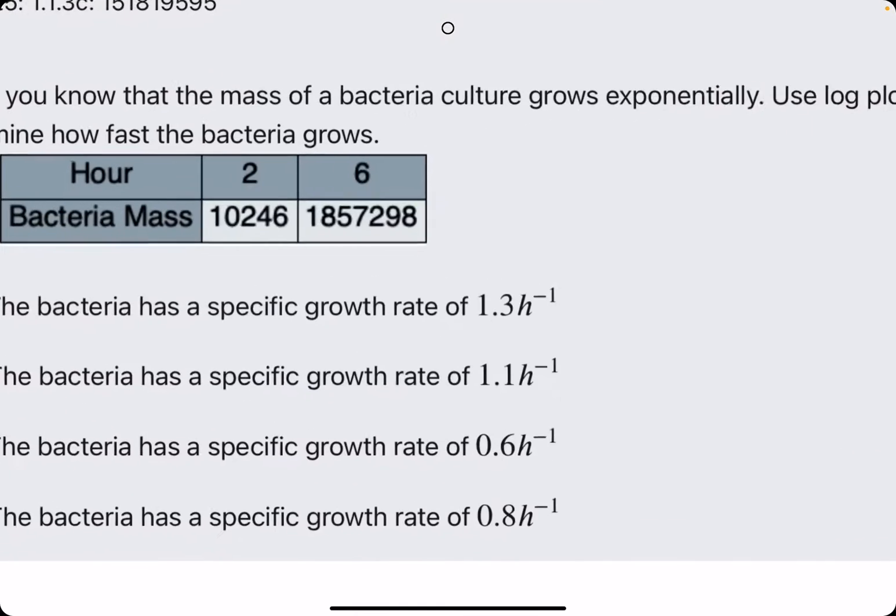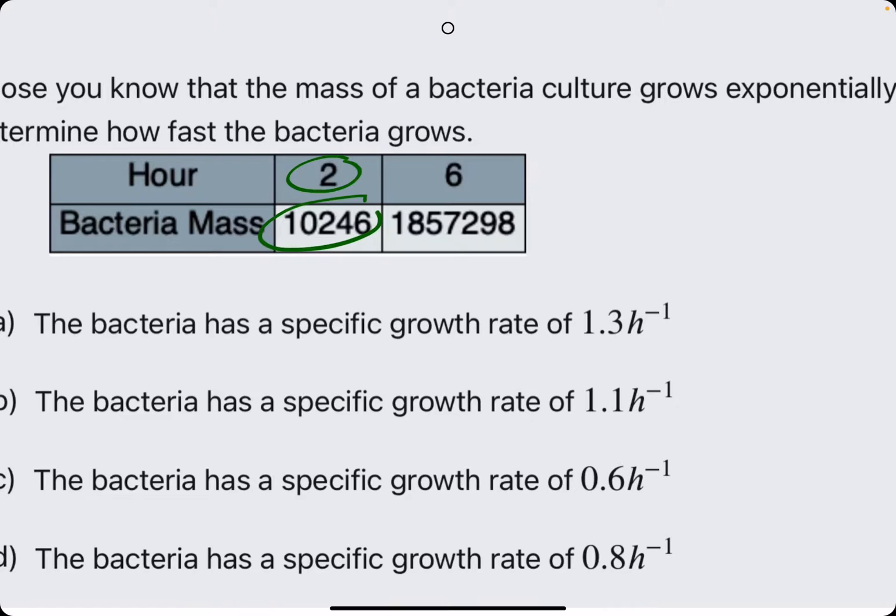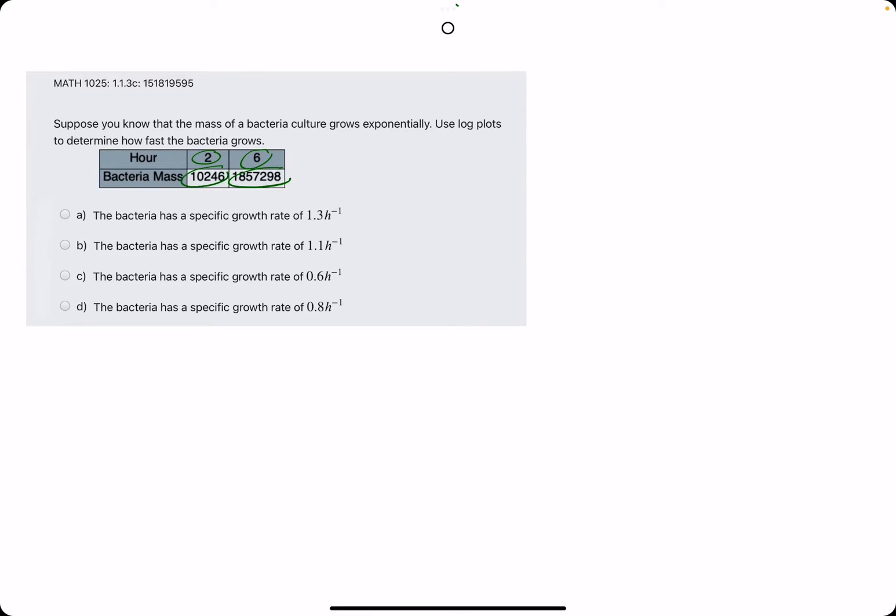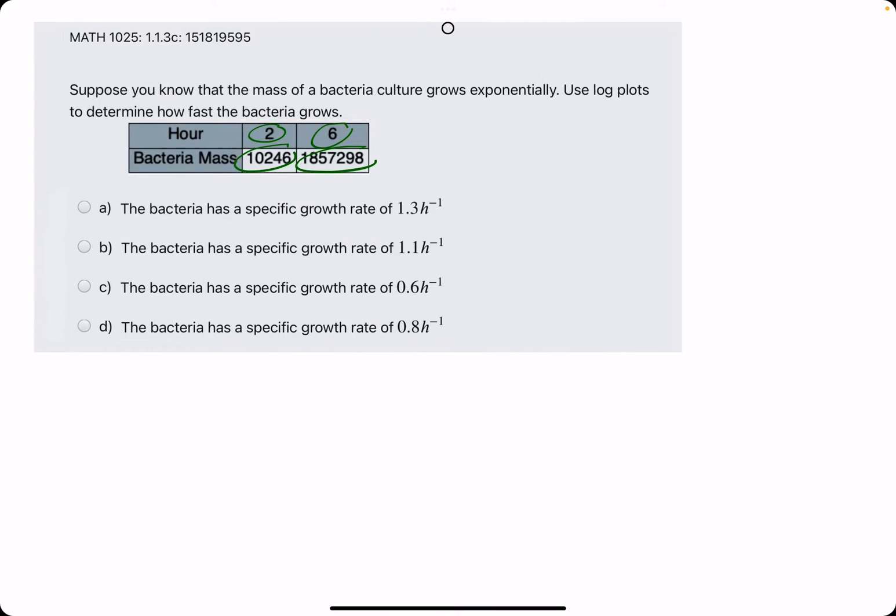So, we want to find the slope between these two points given to us in this chart, but before we do so, we want to take the ln, the natural log, of the two bacteria mass values.